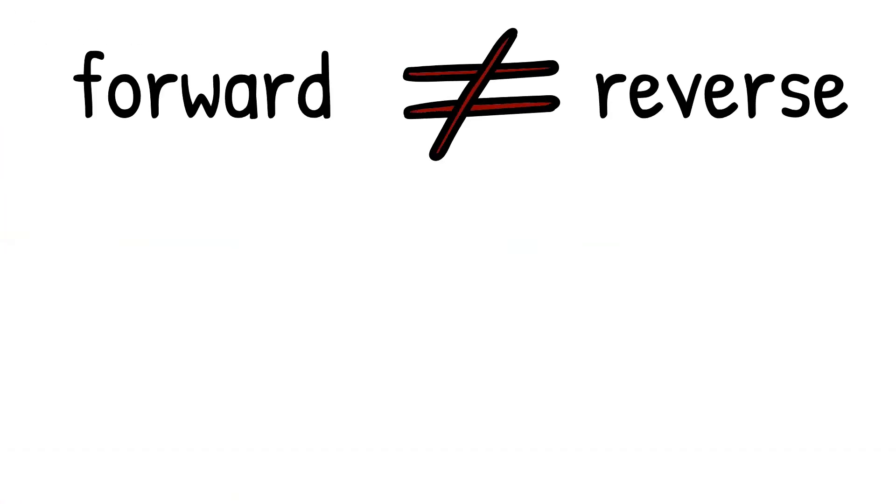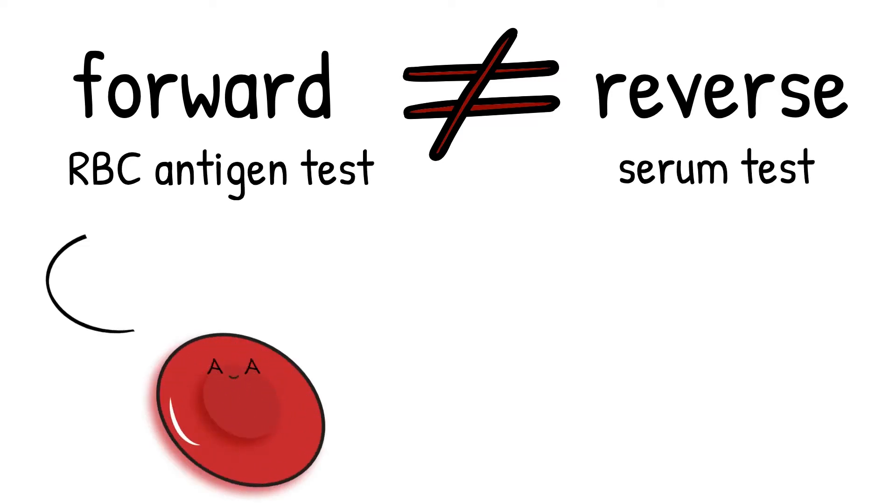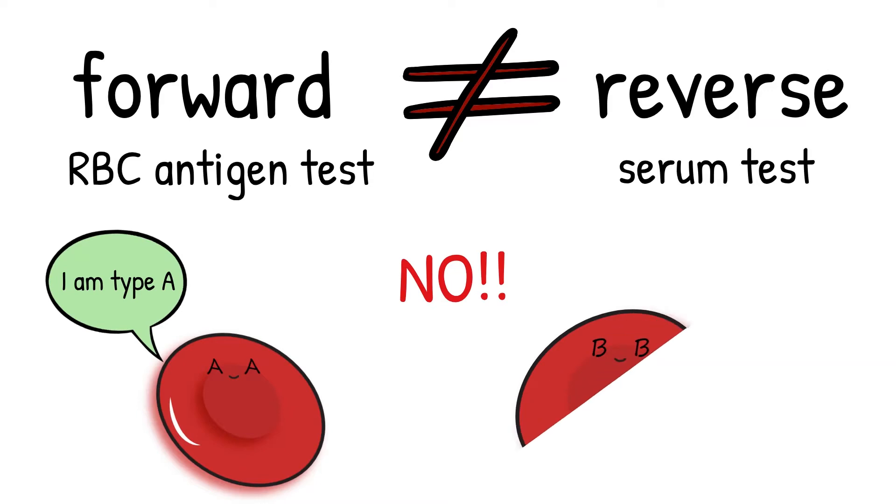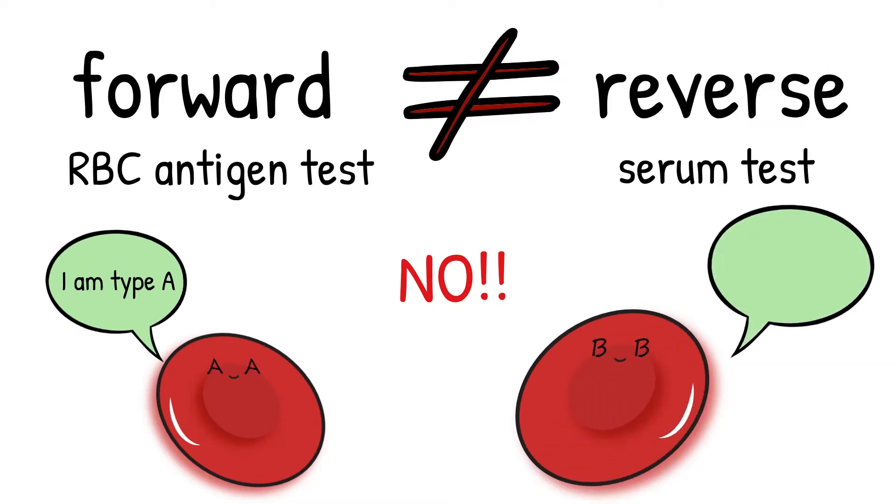A discrepancy exists when the results of a red blood cell test and the serum test do not agree with each other. This can cause from either unexpected positive or unexpected negative. One thing to not overlook when approaching ABO discrepancy is technical error.